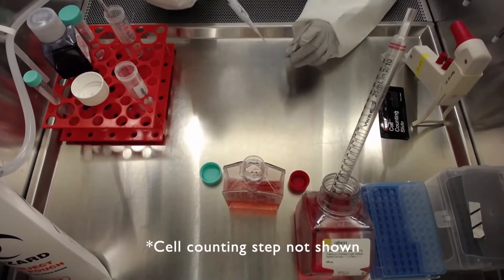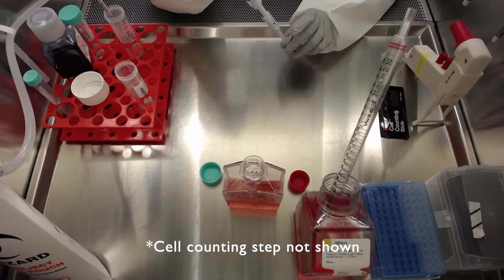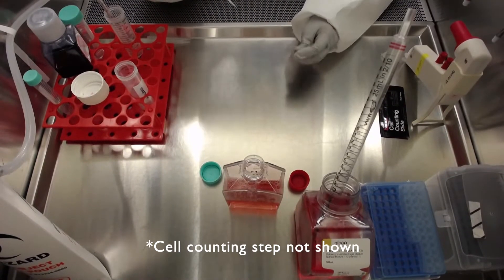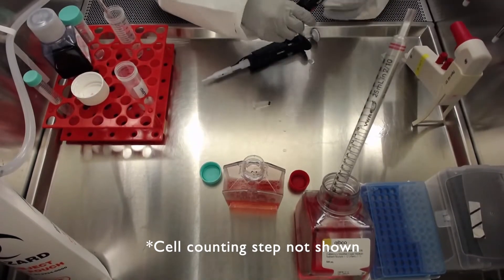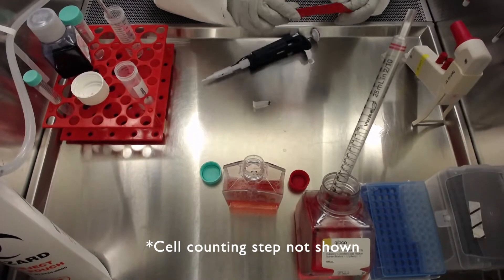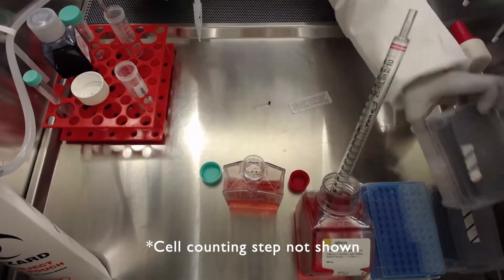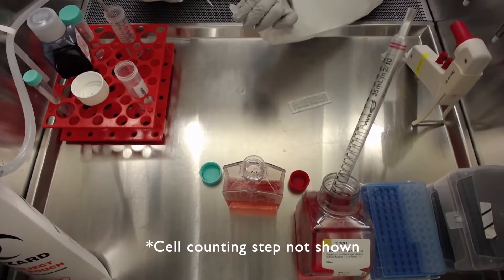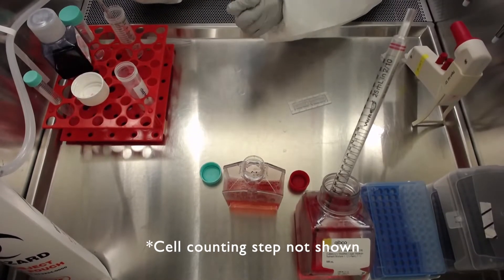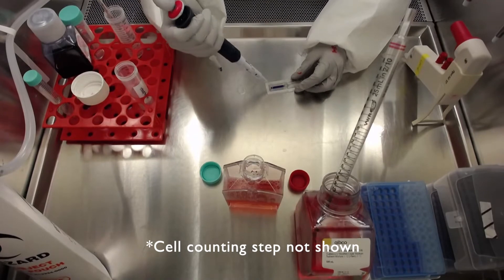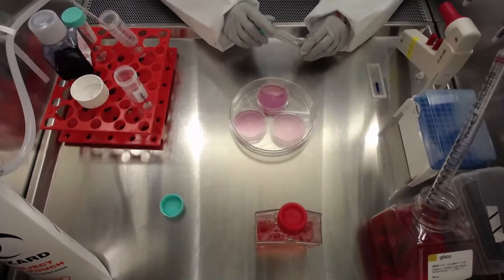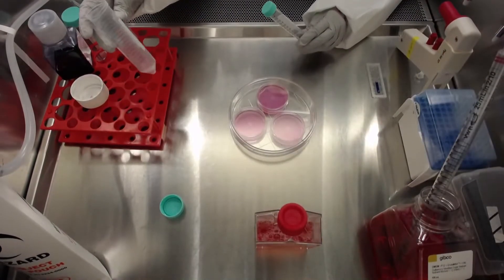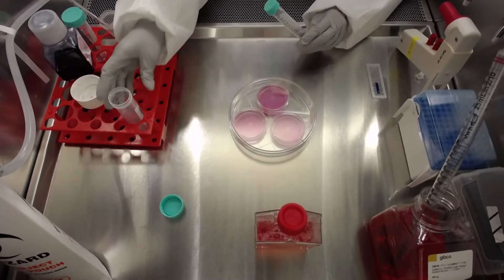Next, count the cells and evaluate the cell viability with trypan blue that you previously aliquoted. An appropriate viability percentage is around 95% of live cells in the cell suspension. Once you have estimated the cell count, prepare a mix of 9.5 million live cells in 1.5 milliliters of neuronal induction media with rock inhibitor.